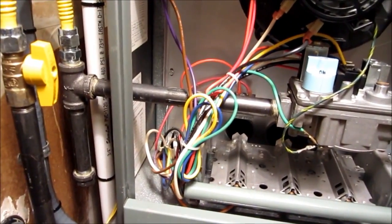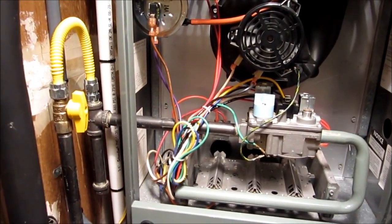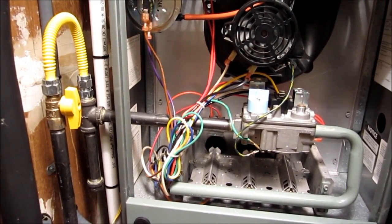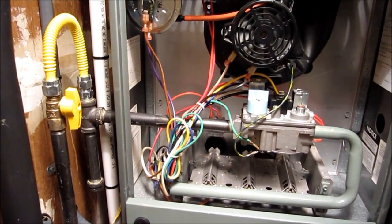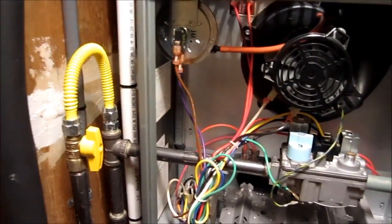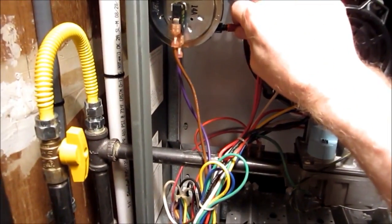Yes sir. On this particular furnace, this Rheem furnace, this is a negative pressure switch. Okay, so it's going to read negative. But nonetheless, let's go ahead and show people here how to set it up. The power is still off at the furnace, correct? Yes, it's still off. Okay, let's go ahead and pop it loose right there at the pressure switch, the little orange rubber hose there.